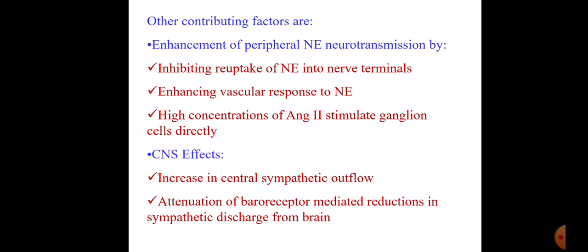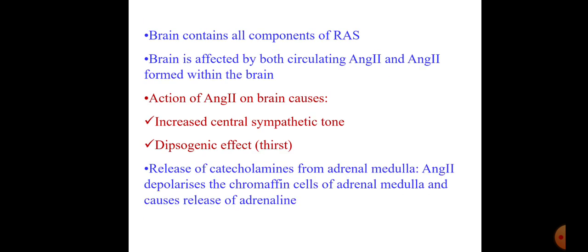High concentrations of angiotensin 2 stimulate ganglion cells directly. Angiotensin 2 activation also tends to increase adrenaline production from the adrenal medulla. There is increased central sympathetic outflow and attenuation of baroreceptor-mediated reduction in sympathetic discharge from the brain. The brain contains all components of the RAS and is affected by circulating angiotensin 2, increasing central sympathetic tone. There is also increased thirst — the dipsogenic effect — and increased catecholamine release from the adrenal medulla, as angiotensin 2 depolarizes chromaffin cells.